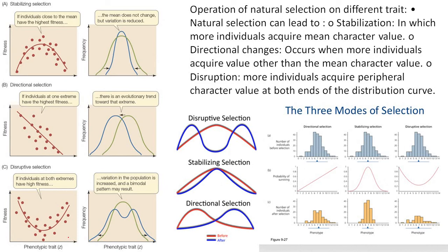The operation of natural selection on different traits: natural selection can lead to stabilization, in which more individuals acquire the mean character value; or directional change, in which more individuals acquire a value other than the mean; or disruption, in which more individuals acquire peripheral character values at both ends of the distribution curve.